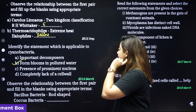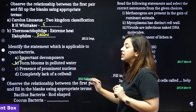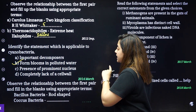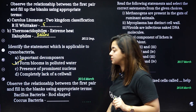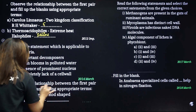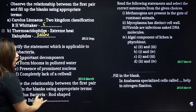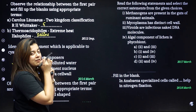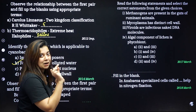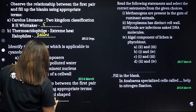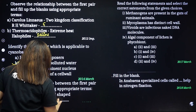Observe the relationship between the first pair and fill in the blanks using appropriate terms. Bacillus bacteria are rod-shaped. Coccus bacteria — we have to say — are spherical shaped.